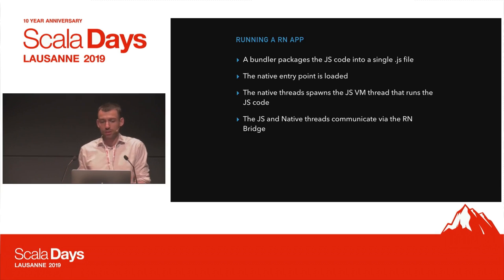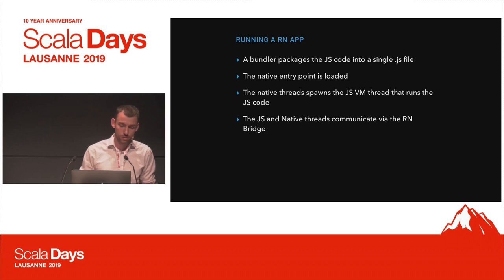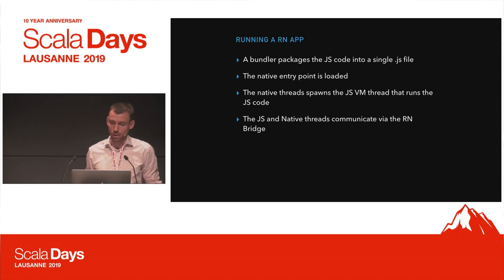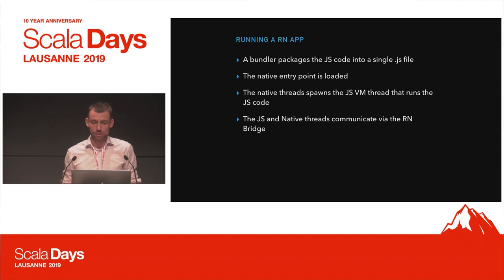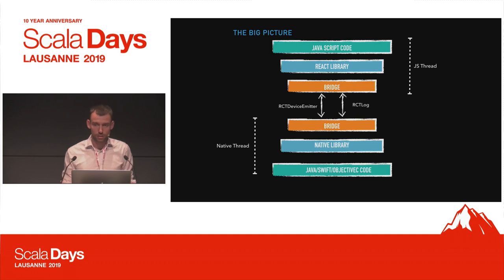When you run a React Native app, a bundler packages your JS code into a single JS file and applies some transformations. The entry point is loaded on your device, spawning the JavaScript VM thread, and then the JavaScript VM thread and native thread communicate over the bridge. You have these two worlds connected via the bridge, passing messages via a proprietary protocol.